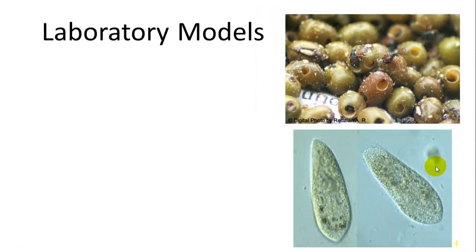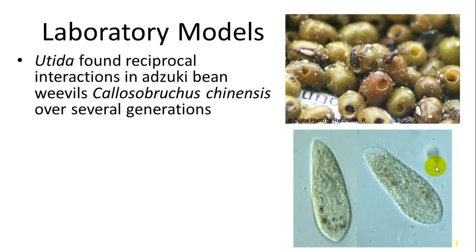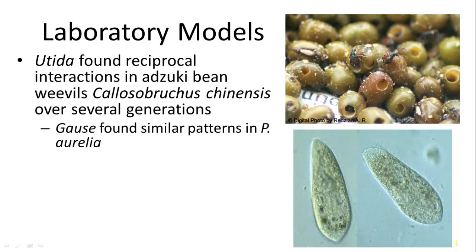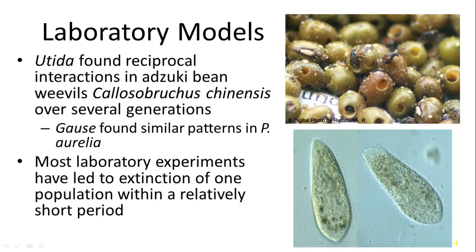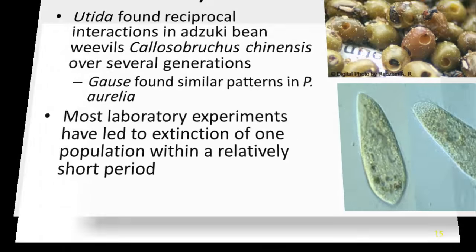Real-life laboratory examples include Utida, who found reciprocal interactions in adzuki bean weevils over several generations. Gause also found a similar pattern in Paramecium. However, most laboratory experiments failed because they led to extinction of one or the other — the Paramecium would overexploit the bacteria and then cause its own extinction. But adding a refuge — an area where prey can hide from the predator — to the model could prevent this outcome.